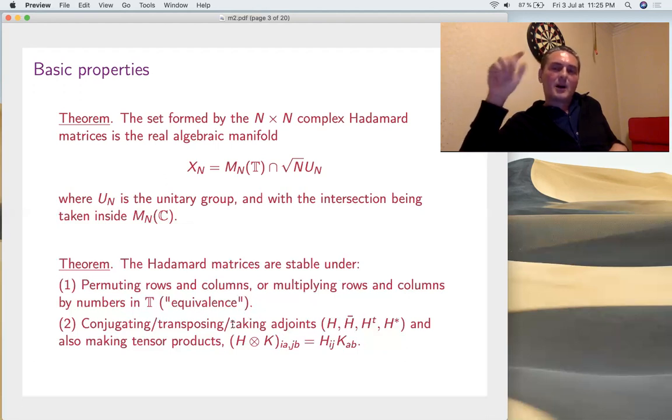So, we have H, H-bar obtained by putting bars everywhere, H transpose by flipping, transposing, and H star, the adjoint matrix, which is obtained by putting bars and flipping at the same time. It's just a little bit more complicated, and also making tensor products. Proof as in the real case, just write down the formula and orthogonality, it's a one-line proof.